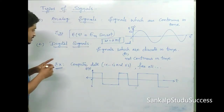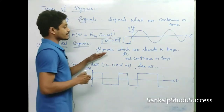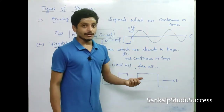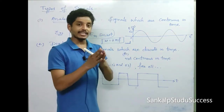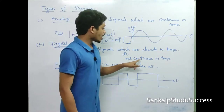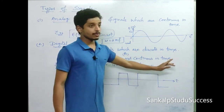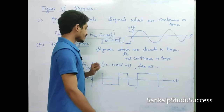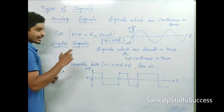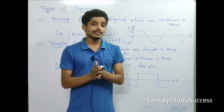Coming to digital signals — digital signals are discrete in time, not continuous. They exist only at particular points in the time domain. The word 'digital' comes from digits. Computers understand machine language, which consists of ones and zeros. If we convert any language into machine language, we get software understood by the computer.